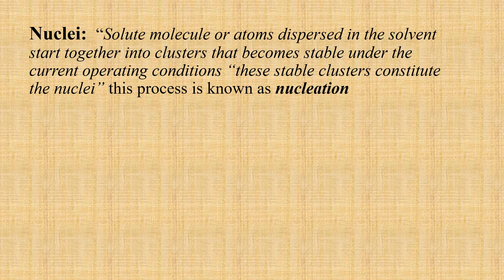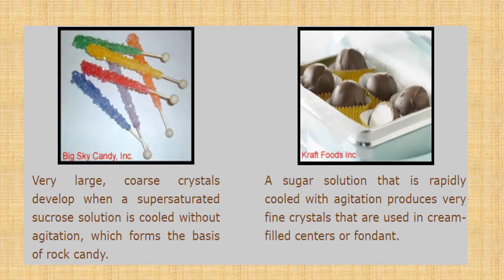Nuclei are stable clusters of solute molecules or atoms dispersed in the solvent — this process is known as nucleation. When a supersaturated sucrose solution is cooled without agitation, very large coarse crystals develop, which forms the basis of rocky candy. While sugar solution that is rapidly cooled with agitation produces very fine crystals that are used in cream-filled centers or fondants. Jitni quick agitation hogi in the sugar solution, utna hi fine solution hoga, jo fondant making mein use hoga.